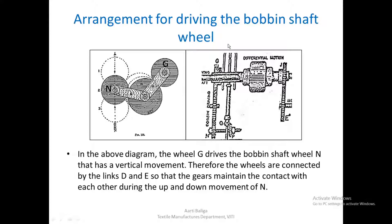The arrangement for driving the bobbin shaft wheel — let us look at that. This is our gearing diagram, and here there is a diagram which shows wheel G from the side view. And this is the wheel N which it is driving, G being fixed and N having a vertical motion up and down. These are connected via this link and this particular wheel which is marked as B.